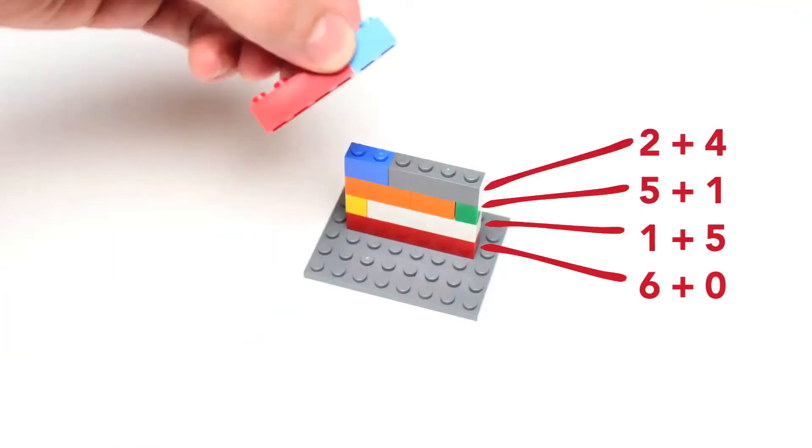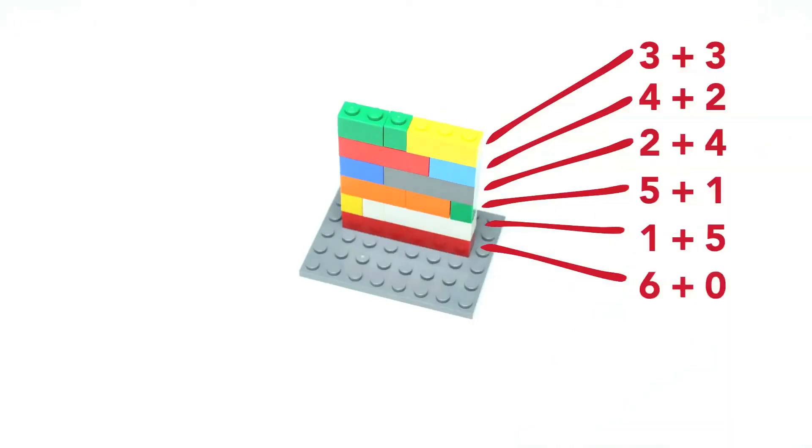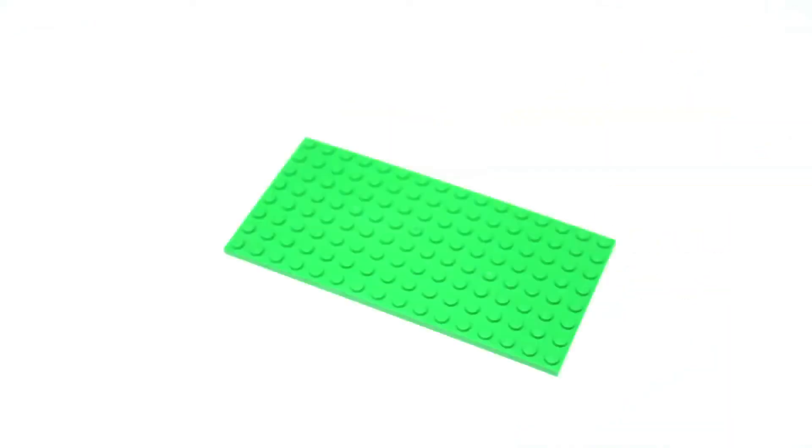Continue building the model until all the equations that equal 6 are represented. Have students draw the model and label all the equations represented by each row of bricks.